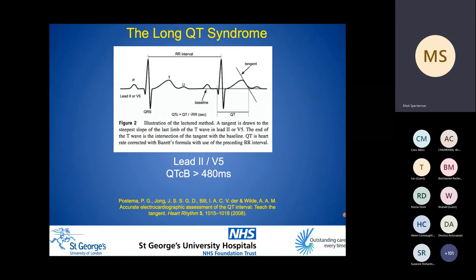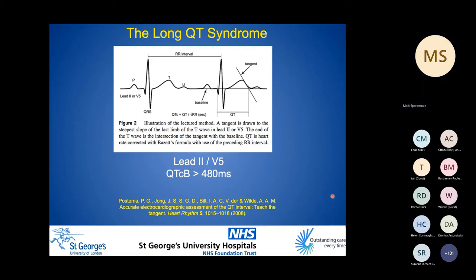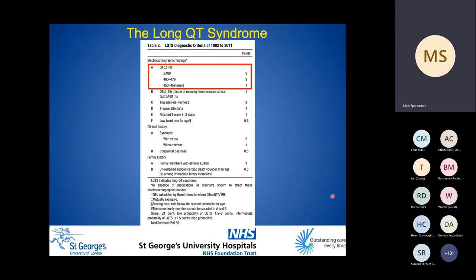Diagnostically, the end of the T wave can be defined by drawing a tangential line to the steepest slope of the last limb of the T wave, best in lead II or lead V5, with the end of the T wave at the intersection of the tangent with the baseline. A consistent finding of a Bazett's corrected QT interval greater than 480 milliseconds is diagnostic. However, corrected QT ranges that, when combined with other features on the Schwartz score, can also give a diagnosis.